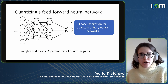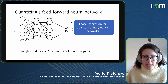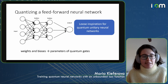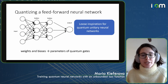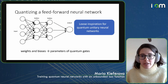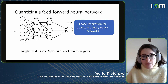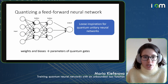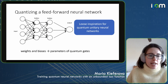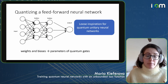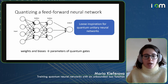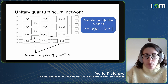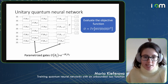We have different quantum machine learning models that are usually to some extent inspired by classical machine learning models. One that I will talk about is what can be seen as a quantum version of a feed-forward neural network. This is just a loose inspiration for what we call a quantum unitary neural network, or what some call a variational quantum circuit. Instead of having weights and biases that a classical network would try to learn, we try to learn parameters of quantum gates.